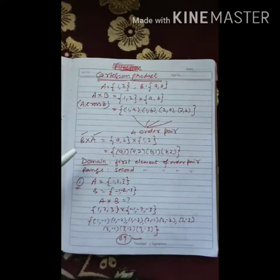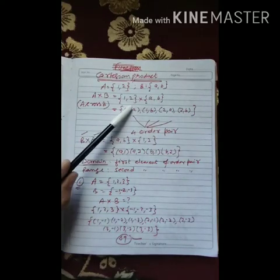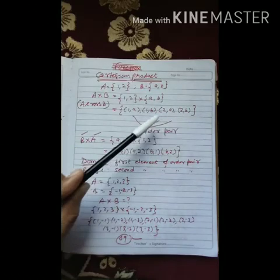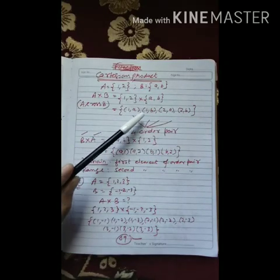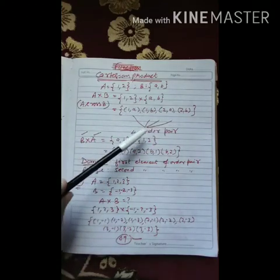This is called A x B. These four are set to be elements, or in other words we can say that there are four order pairs.